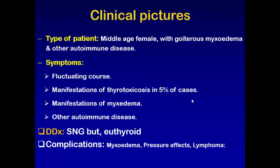The differential diagnosis is from simple nodular goiter, but in simple nodular goiter the patient is usually euthyroid. Complications of Hashimoto's disease are myxedema, pressure effects, and lymphoma.